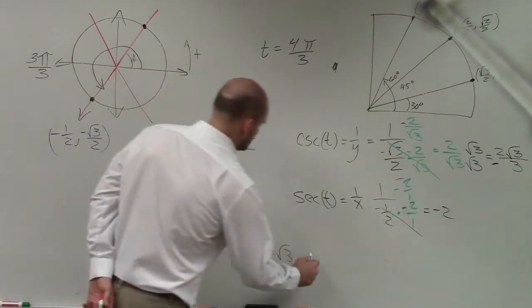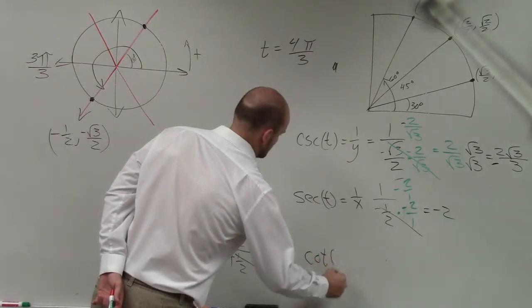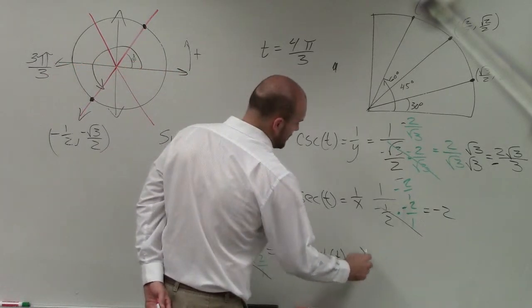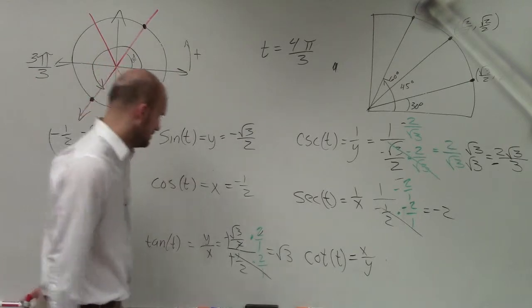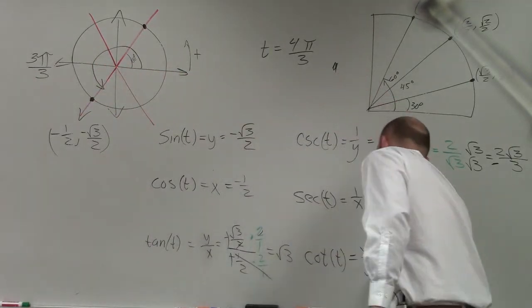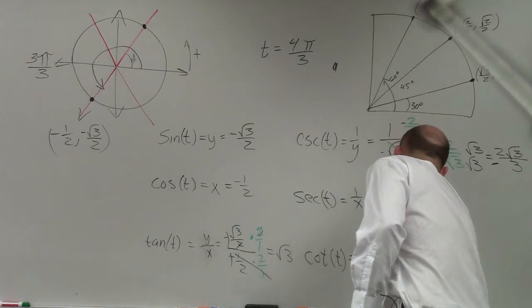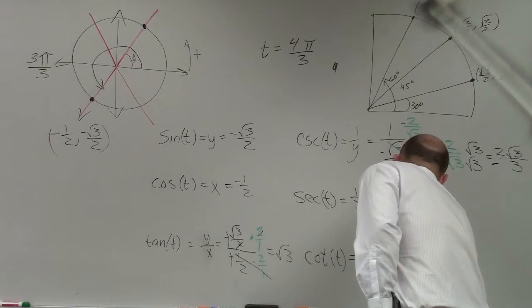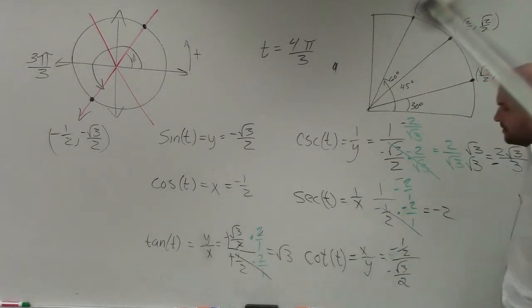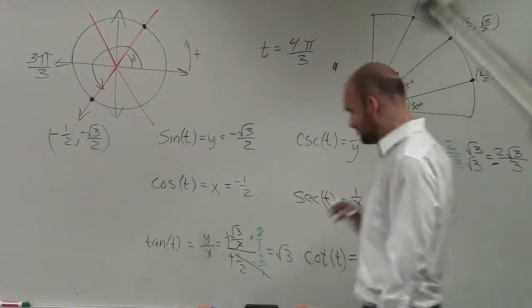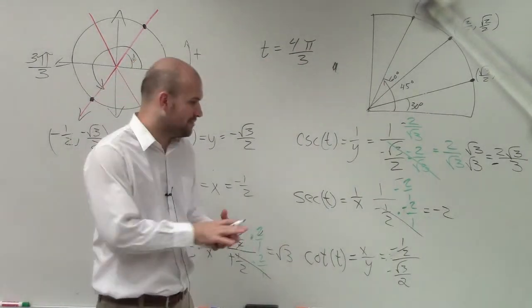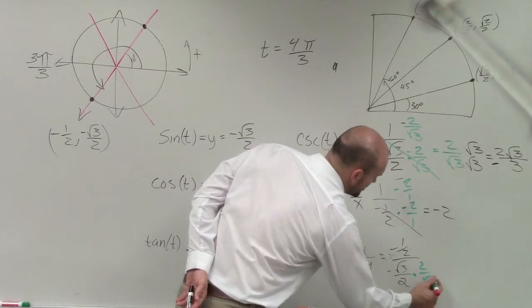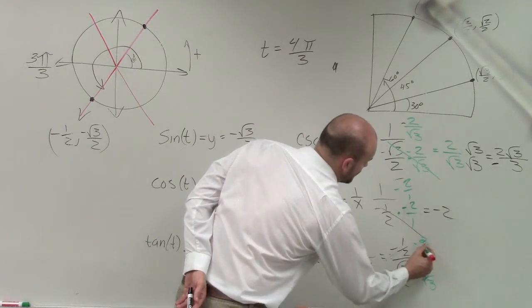And then I have the cotangent. To do the cotangent, that's going to become, when on the unit circle, my x-coordinate over my y-coordinate. This one looks like it's going to be fun. So that equals -1/2 divided by -√3/2. These are the ones I like a lot because the 2's just actually eliminate out. But let's multiply by the reciprocal so you guys can see that.